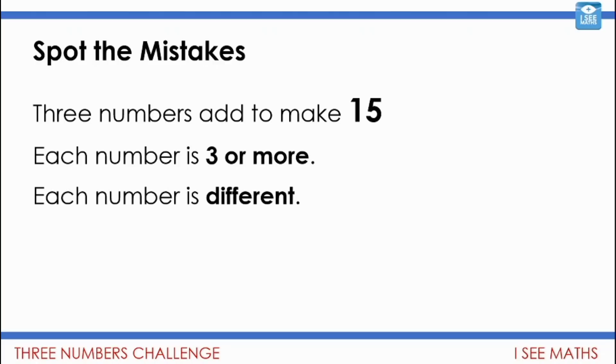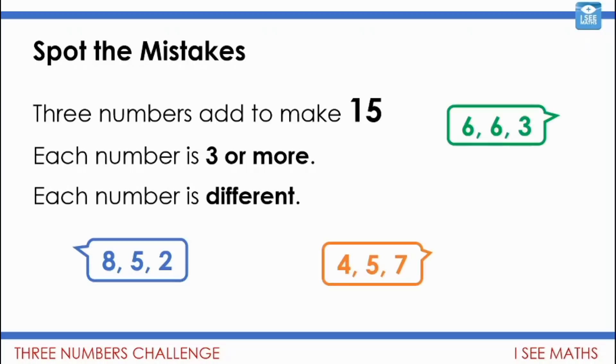Spot the mistakes on this one. Three numbers had to make 15. Each number is three or more and each number is different. I once gave this to my class and here are three of the incorrect responses. I wonder if you can find what mistake has been made in each example. Pause the video and see if you can see. If you're ready, we'll have a look again. So three numbers had to make 15. Each number three or more. Each number is different. Well here, this two is not three or more.